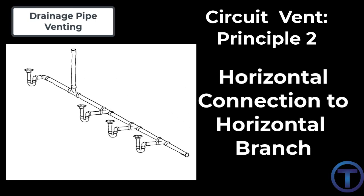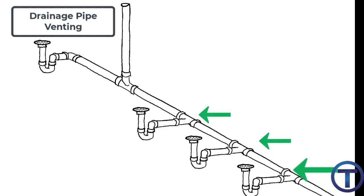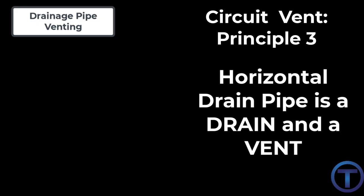Circuit vent principle two: each fixture drain shall connect horizontally to the horizontal branch being circuit vented. So you've got your main branch going through there and all of the fixture drains branching off — those have to connect horizontally.